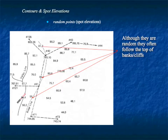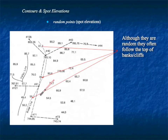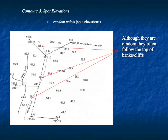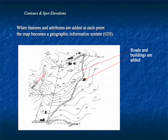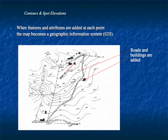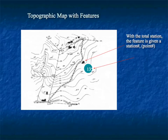Once they have contours, they take a series of measurements at random points — like the intermediate foresights we did for elevation. These points along ridges, banks, and cliffs provide enough information to create contour lines. That's the process: spot elevations are taken and contour lines are generated from them. A typical topographic map shows contours and may show features like roads and buildings.